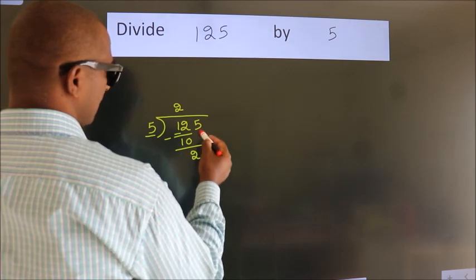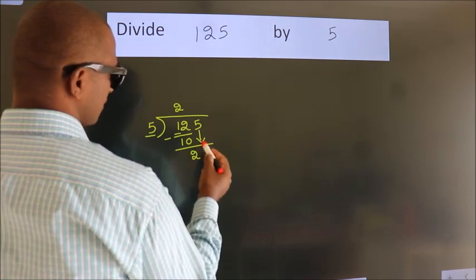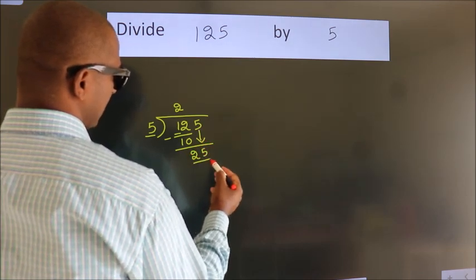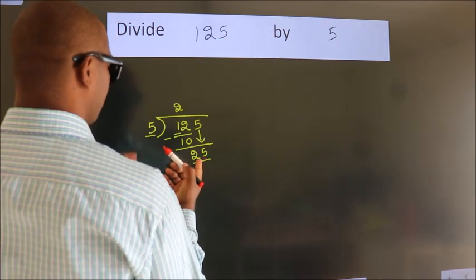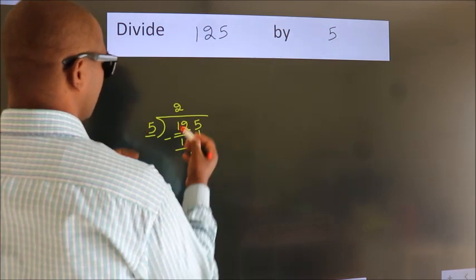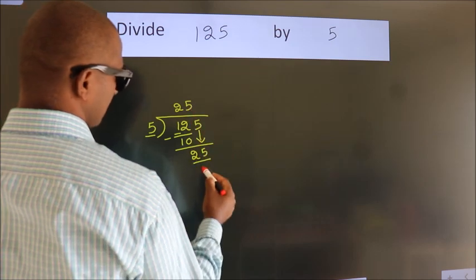After this bring down the beside number. So 5 down. So 25. When do we get 25? In 5 table. 5 5s, 25.